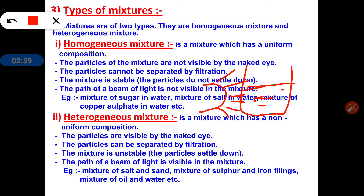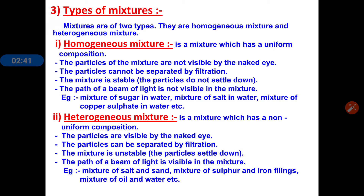Now see the examples of homogeneous mixture. Mixture of sugar in water — sugar completely dissolves in water. Mixture of salt in water — salt also completely dissolves in water. Copper sulfate dissolved in water is also an example. All of these are examples of the homogeneous mixture.